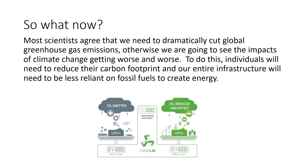So what should we do? The scientific consensus is that we need to dramatically cut global greenhouse gas emissions, otherwise the impacts of climate change will get worse and worse. Individuals need to reduce their carbon footprint, and our entire infrastructure needs to become less reliant on fossil fuels. Global agreements such as the Paris Agreement attempt to do this — it aimed to limit the amount of global warming — but the problem is that it's hard to get all countries to agree.